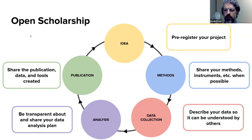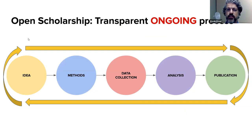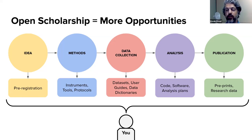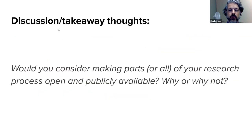To wrap up: if we look at open scholarship across the whole cycle — we've pre-registered our work, shared our methods, described our data, been transparent about how we analyze data, shared a preprint, published articles, and shared our data. This is an ongoing process: you have to continually think about whether something has value to someone else and should be made open. Open scholarship is not just about you — if everyone is practicing open science, you're getting access to more ideas, methods, data, and analysis strategies to better inform your work.